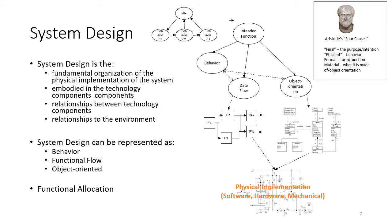Based on the data flow and object orientation models, we come down into a physical implementation in software, hardware, or mechanical systems. That design definition would be in the form of circuit diagrams for hardware, flow charts for software, or mechanical CAD diagrams for mechanical components. We really want to get down in the design process to the actual design implementation.